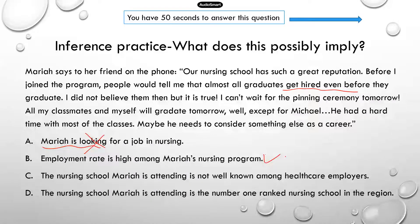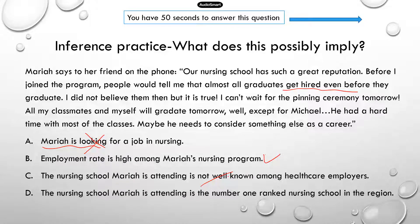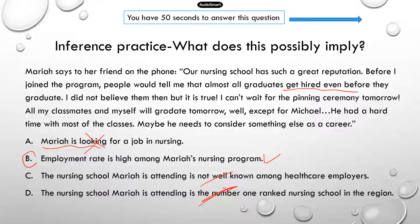I would suggest you go through all the answer choices just in case — there might be two that both look correct, so take a closer look. Option C, "The nursing school Mariah's attending is not well known among healthcare employers" — that's not true, because if most graduates get hired even before they graduate, that means the program is really well known among employers. Option D, "The nursing school is the number one ranked in the region" — you can't infer any ranking information; there's no mention of a ranking in the paragraph. So the correct answer is B.